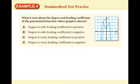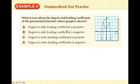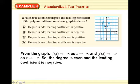What is true about the degree and leading coefficient of the polynomial whose graph is shown? First, we decide whether the degree is even or odd. Since the two ends are going in the same direction, the degree is even — so we can cross out answers A and B. Since the whole thing overall looks like a frown, with both ends going toward negative infinity, the leading coefficient is negative. The answer is D.